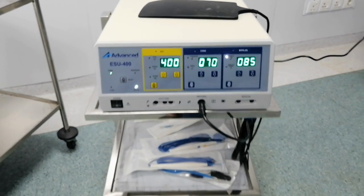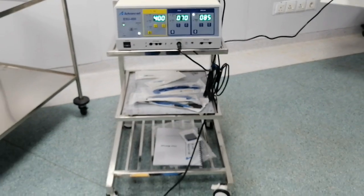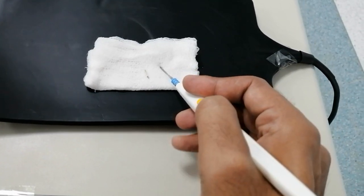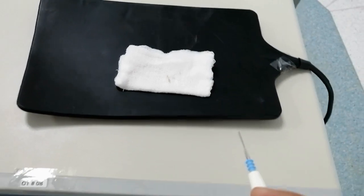An electrosurgical unit is a medical device used to perform surgical procedures. It uses high-frequency electrical currents to cut, coagulate, or vaporize tissue.